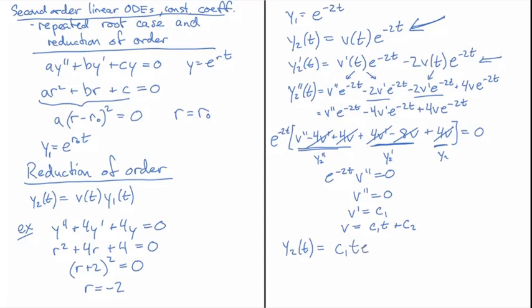So our general solution becomes y(t) = c₁te^(-2t) + c₂e^(-2t). I've just multiplied it out there. So you can see even though we were looking for a second solution we actually found a full general solution here because it's got both of the c values already right there and you'll notice this is the y₁ that we started with.